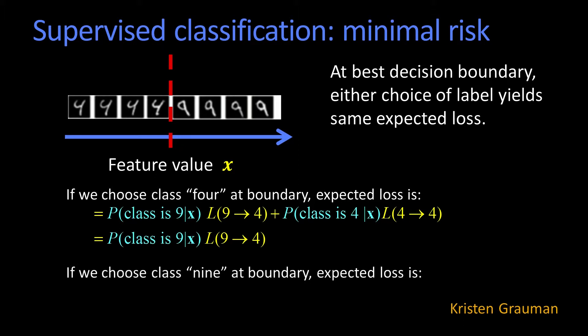Likewise, what's the expected loss if I say nine at that location? Well, symmetrically, it's just what is the probability that it actually was a four? And what's the loss of calling a four a nine? So those are the two different values, the losses that I want.